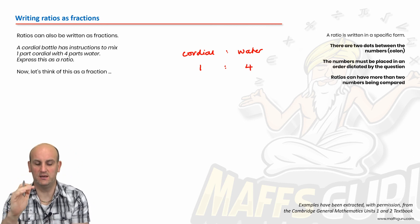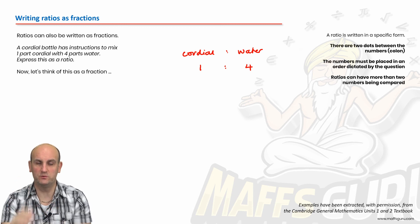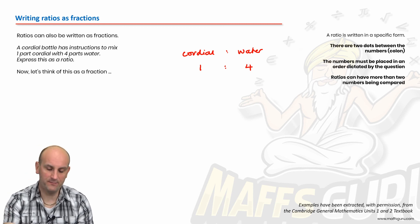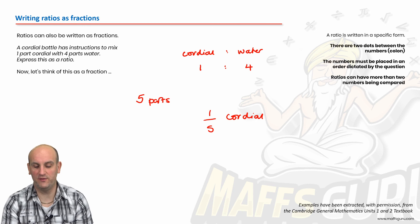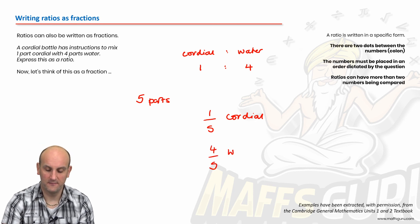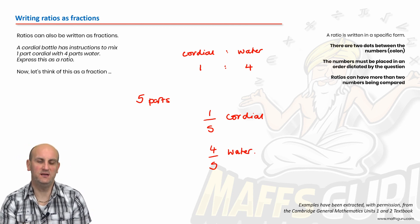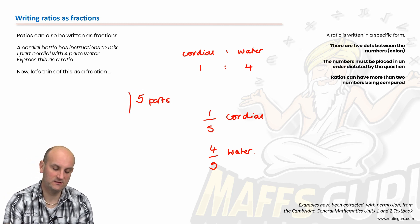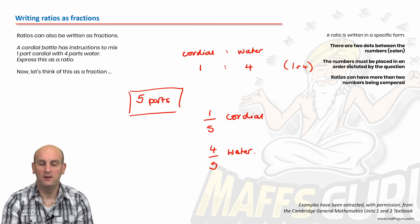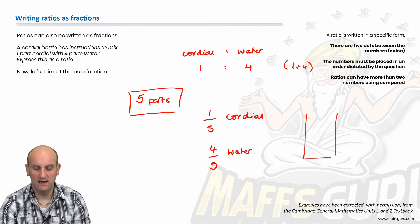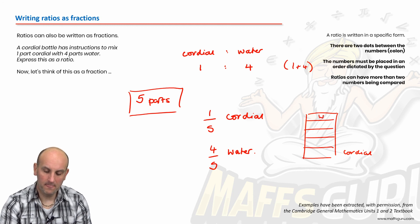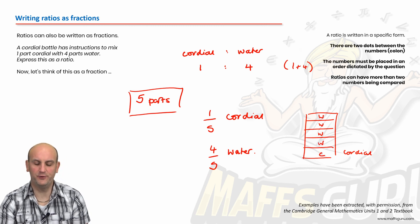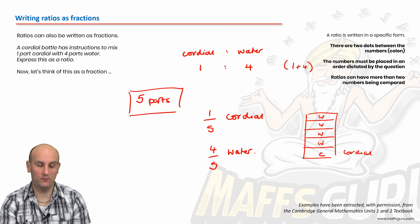If we now move on, let's think of it as a fraction. Cordial dot dot water. And it was one part cordial to four parts water. Now for me, if I've got a glass of water and I'm putting one part of cordial in and four parts of water, then how many total parts do I have? I have five parts. By adding those together, it tells me that I've got five parts. Of which one of those parts is cordial. So I reckon I have one fifth of my thing is cordial and I reckon that four fifths is water. This five parts coming from the one plus the four actually comes in really, really useful later. If I was to draw a glass and I've got one part of cordial and I've got four parts of water, then I do think I've got one fifth of cordial and four fifths of water.